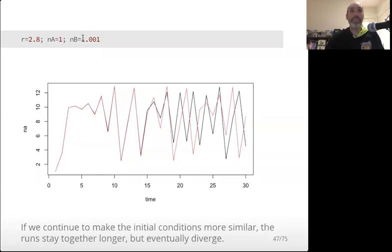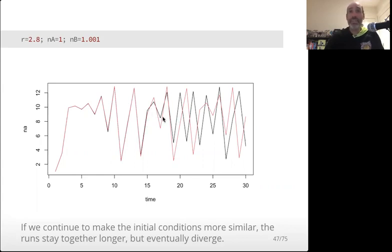Now I've increased the similarity in the initial conditions: one starting at 1, the other at 1.001 — a 0.1% difference. We can see they go up with very slight differences, but at about time 15 they become different from each other very quickly, get out of sync, and don't get back in sync. The more similar the initial conditions are, the longer they stay in sync, but they do eventually diverge.